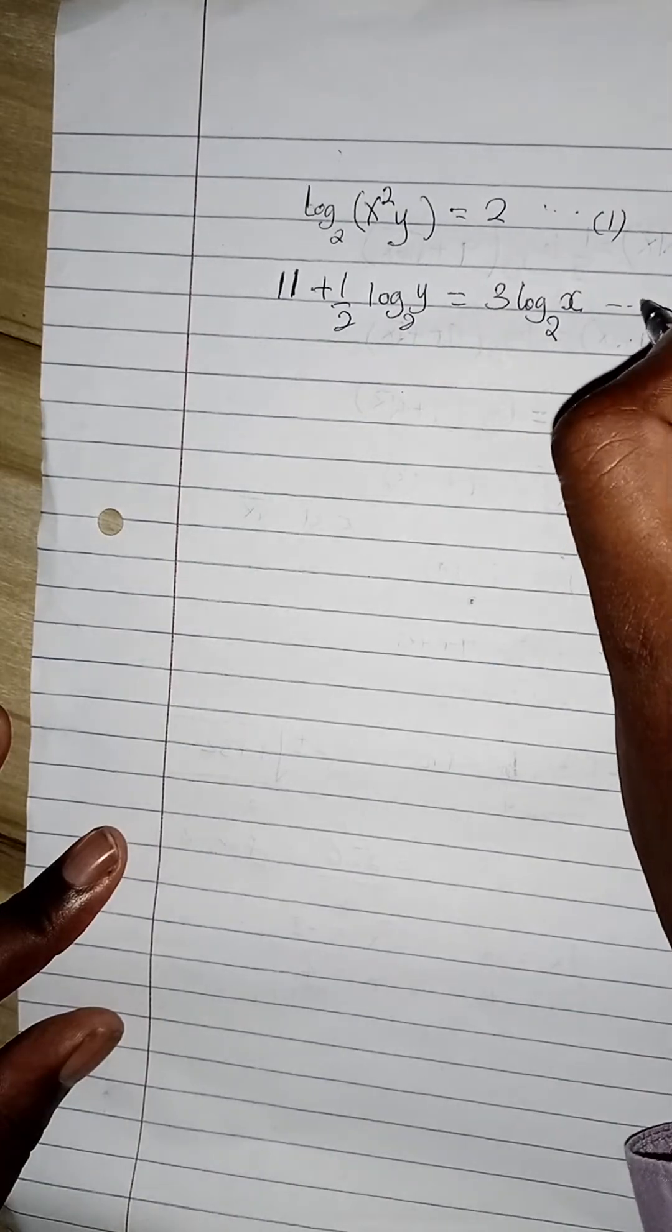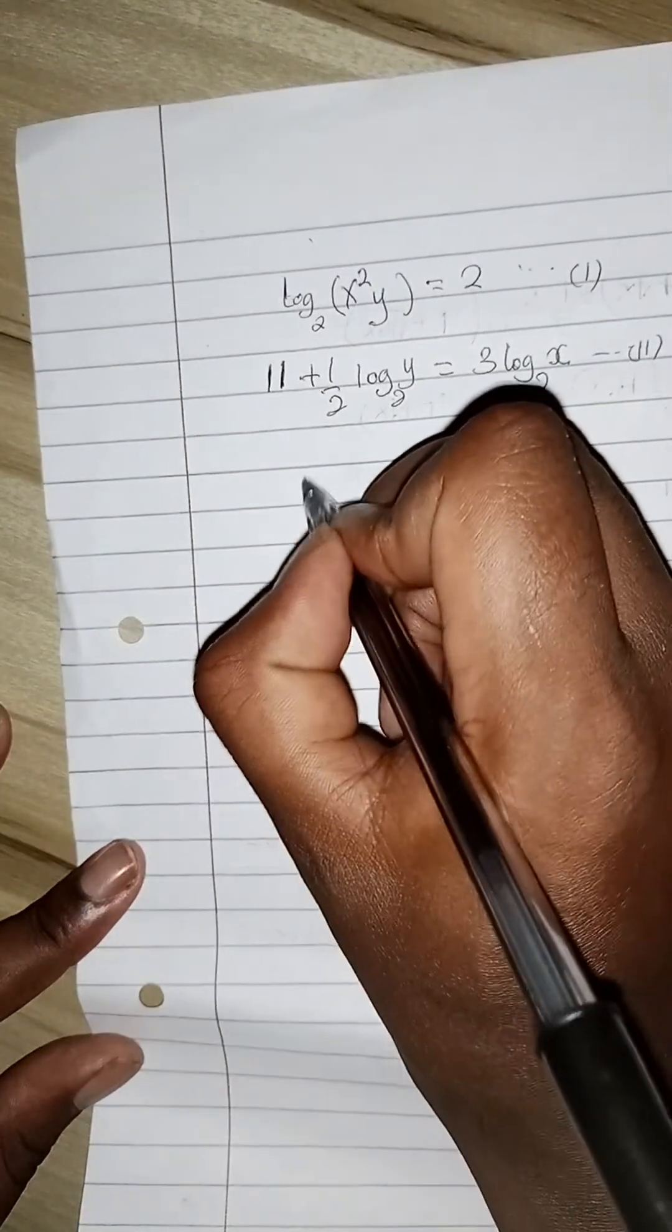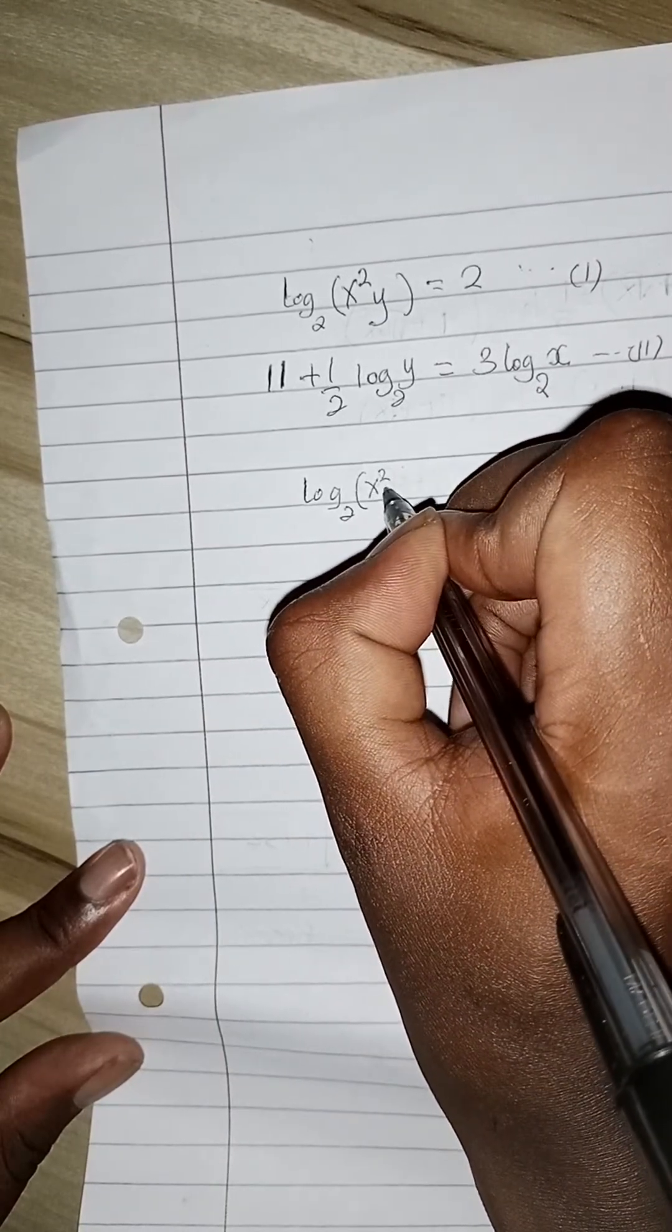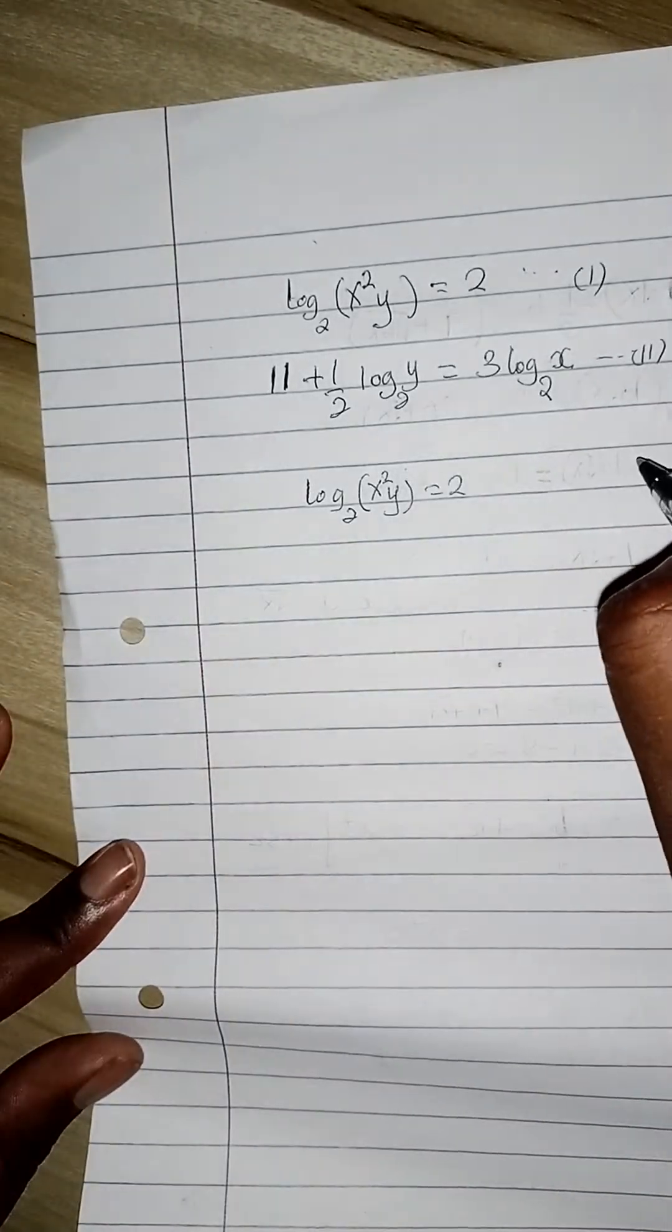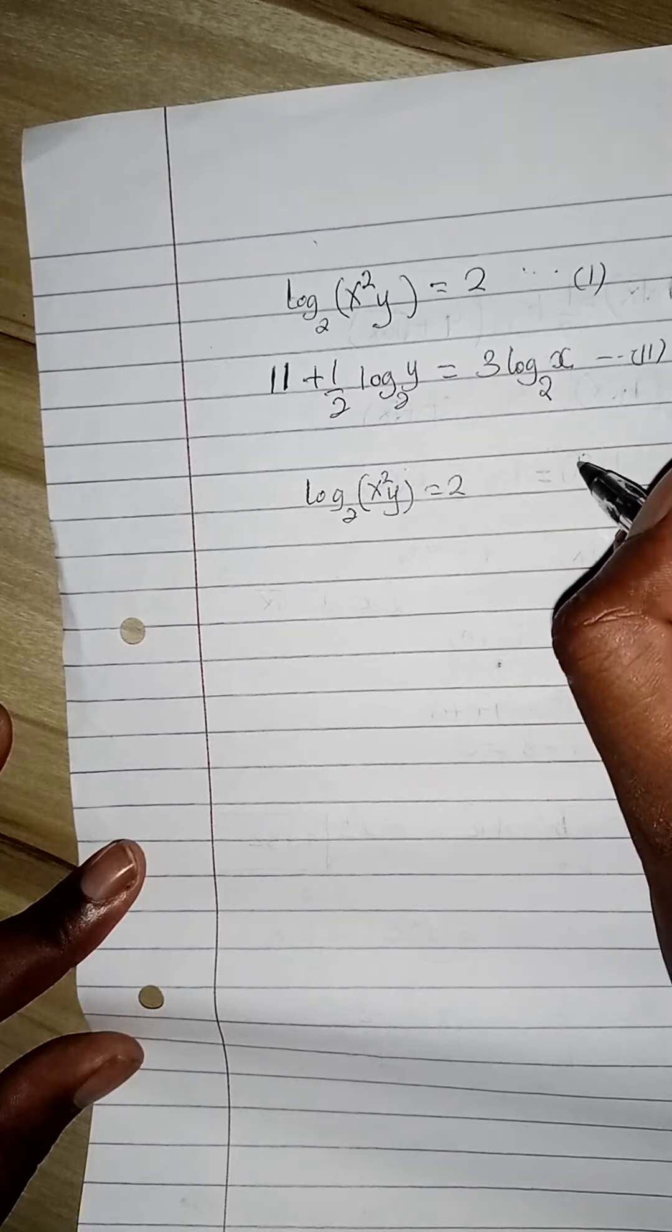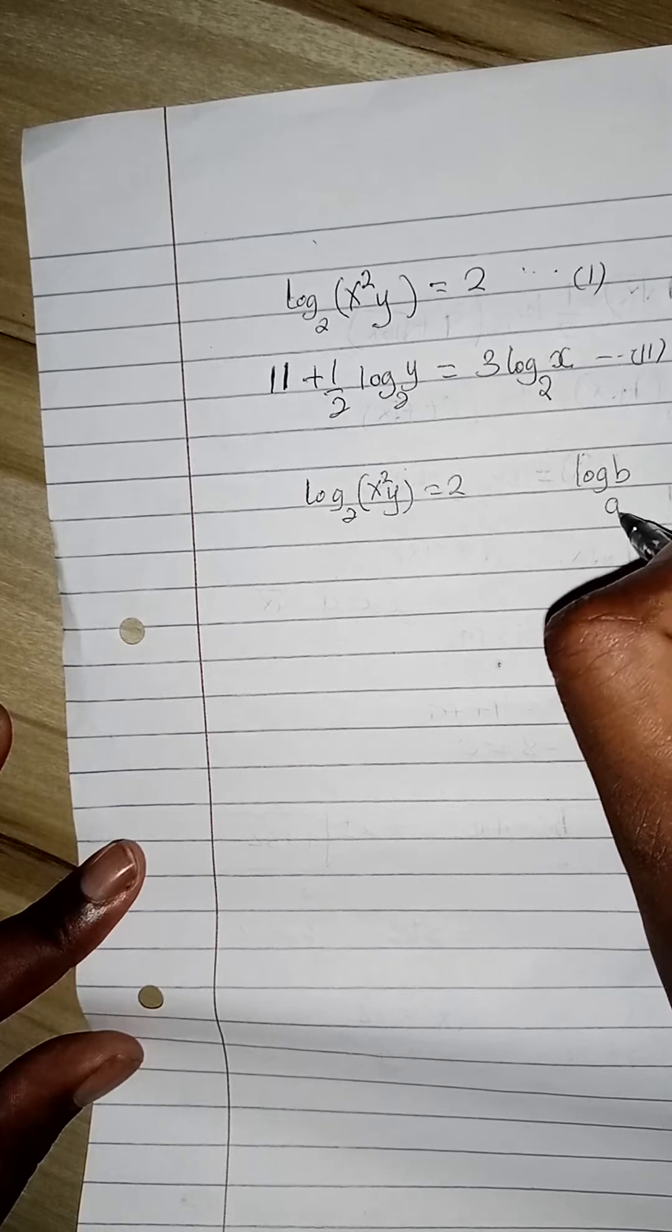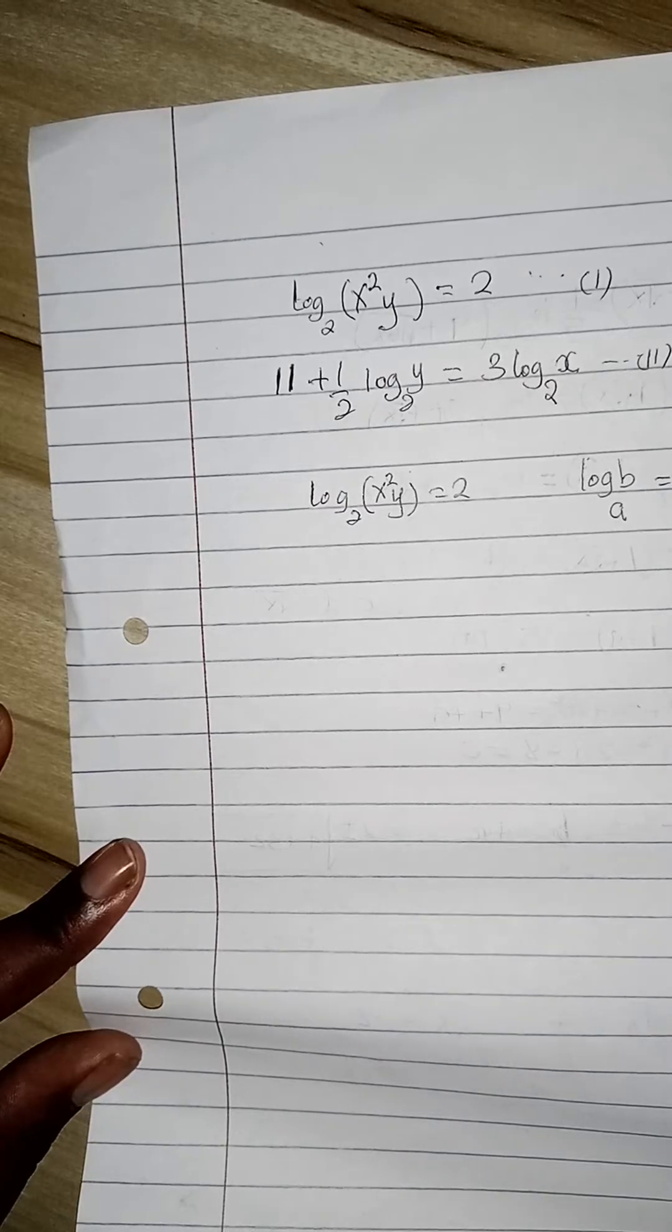Let's first deal with equation number one. Log to base 2 of x squared y equals 2. You know that logarithms and indices are related, so log of b to base a equals n can be written as b equals a raised to power n. We're going to use this relationship.